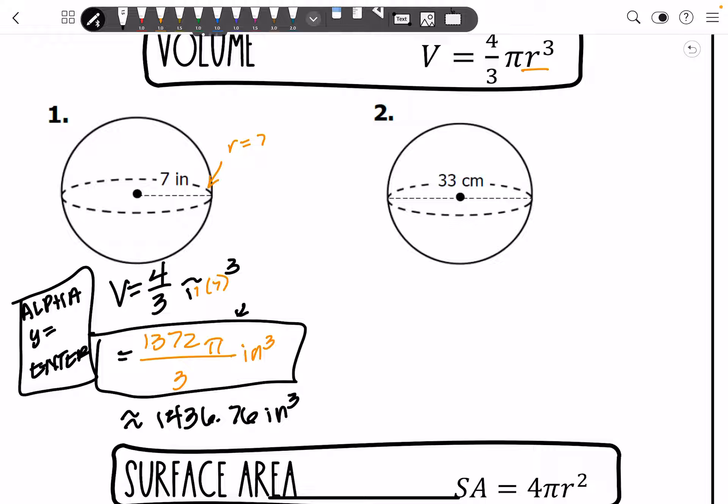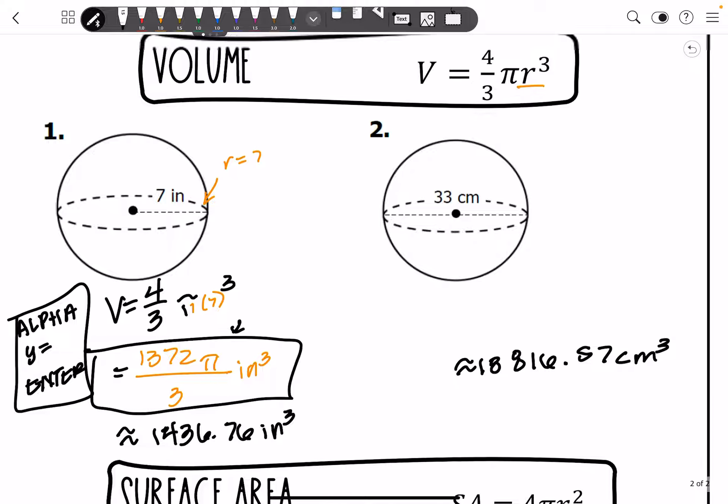So I want you guys to go ahead and do number 2. I will tell you that your approximate answer should be this huge number. Remember, I want you rounding to the nearest hundredth because that is more exact than rounding to the tenths. Alright, so that's finding volume.